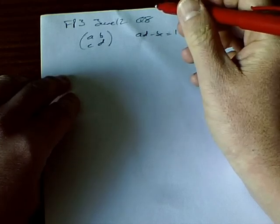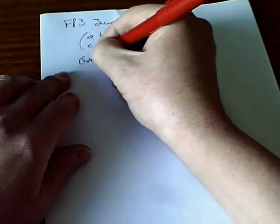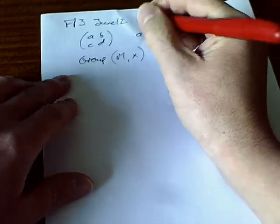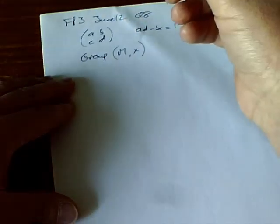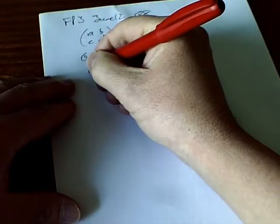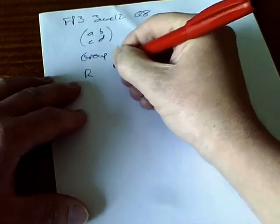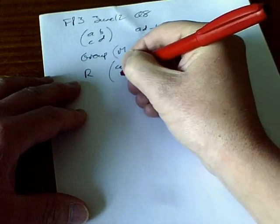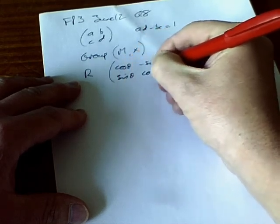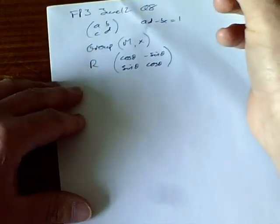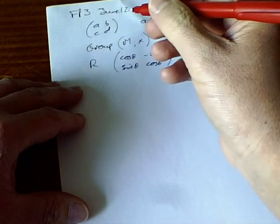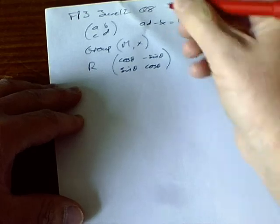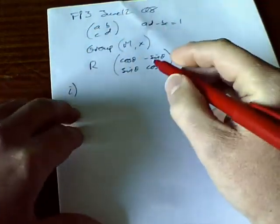This set forms a group M under matrix multiplication. We are also asked to consider group R, which is the set of matrices of the form cos θ, minus sin θ, sin θ, cos θ. We want to prove that R is a subgroup of M.